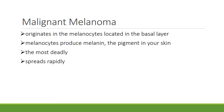The third and most dangerous kind of skin cancer is malignant melanoma. It originates in the melanocytes found in the basal layer — the melanin-producing cells that give color to your skin. The most deadly form of skin cancer is malignant melanoma and part of the problem is it spreads very rapidly.